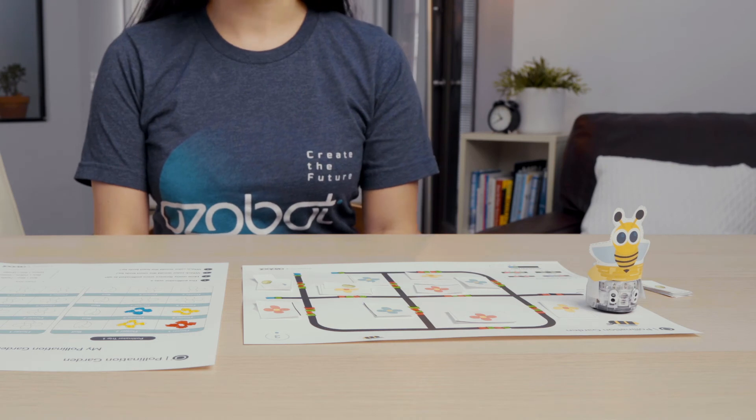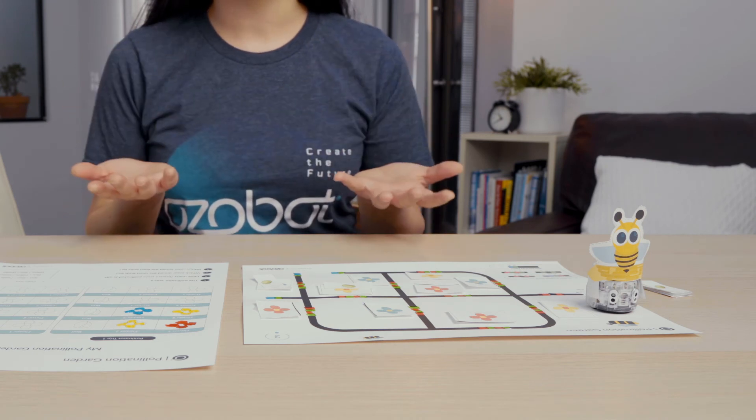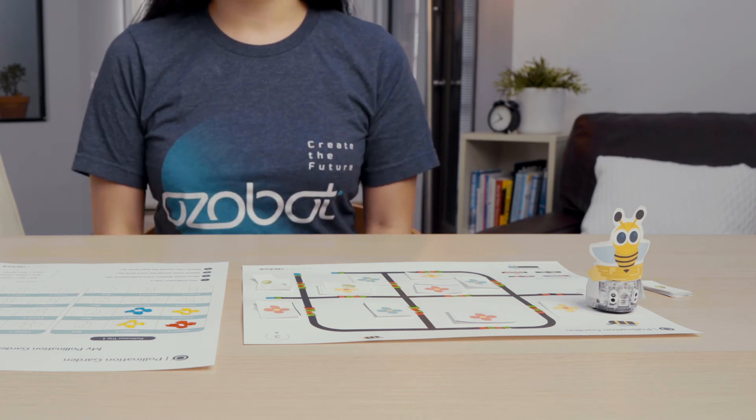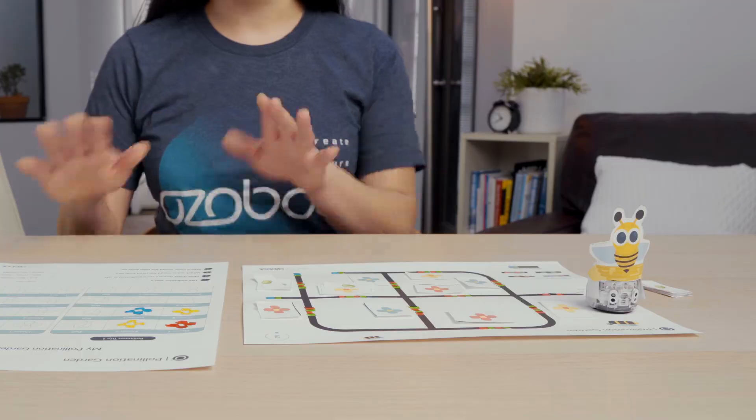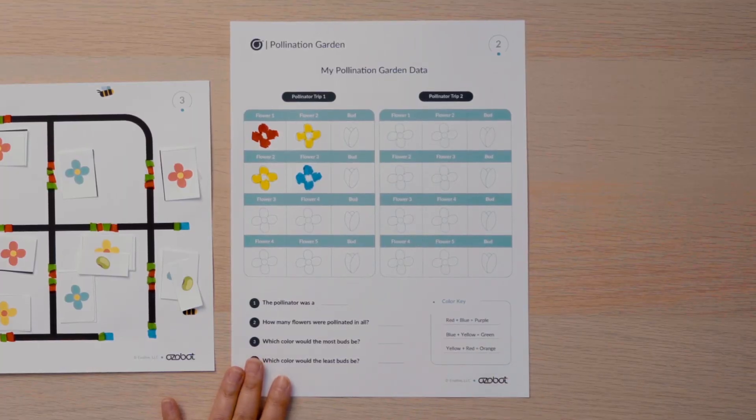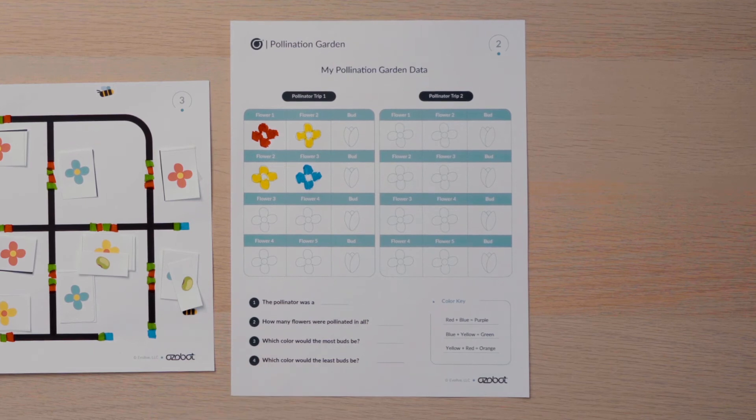Wonderful work creating an interactive model to show how animals help with pollination. You can now use your model to collect data or information about the flowers that were pollinated. Look at the pollination garden data sheet. You will run your pollinator bot two more times, but first you will complete trip one.